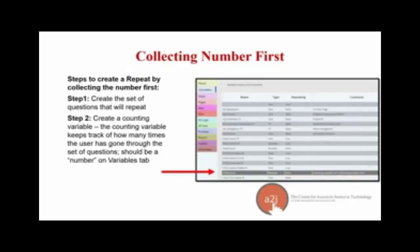There are seven steps for repeat loops done by collecting the number first. Step one: create the series of questions that will be repeated — what is your child's name, birth date, who is the father, where do they live, what school do they attend — all questions to be asked about each child. Step two: create a counting variable. The counting variable is specific to A2J Author, not used in HotDocs, and it keeps track of how many times the user has gone through that set of questions. It should always be a number — if the variable type is not a number, your repeat loop will not work.